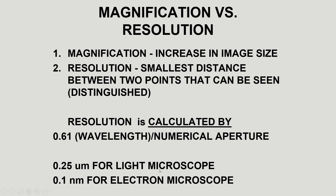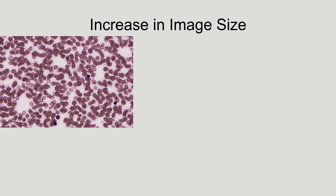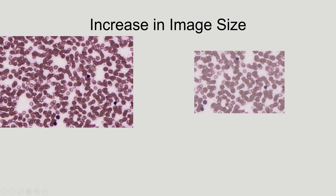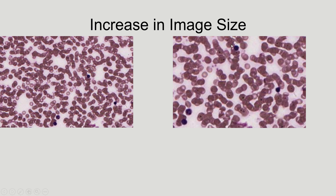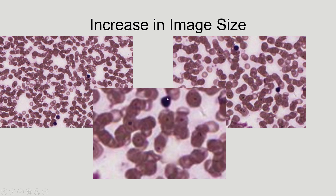Here we're going to exemplify what an increase in image size looks like. This is a blood smear with lots of red blood cells, some white blood cells, and some platelets. If we increase the image size and zoom in, the white blood cell gets bigger — but have we made anything clearer? No. We still can't distinguish between these two points; we've just made it more obvious that we can't. This is purely magnification — just an increase in image size but not resolution.